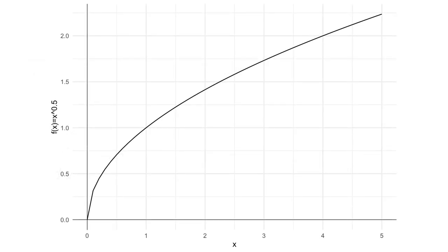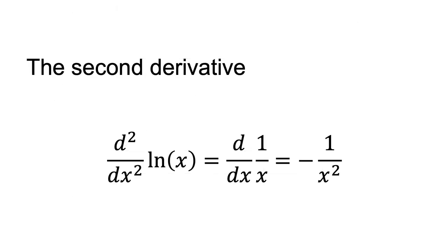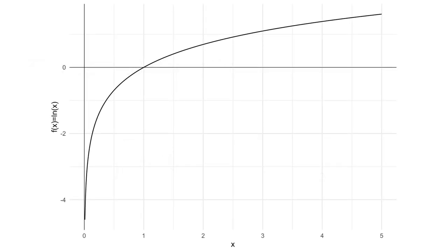You can see that x to the power of 0.5 is increasing at a decreasing rate in this plot. The second derivative of the logarithmic function is d squared/dx squared ln x equals d/dx 1/x equals minus 1/x squared. This second derivative is negative for all values of x for which ln x is defined. This implies that ln x is increasing at a decreasing rate. The function is concave. You can see that ln x is increasing at a decreasing rate in this plot.